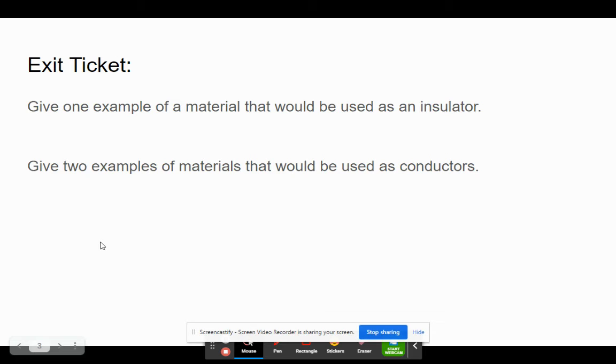All right, kiddos. So I want you to head to your Google Classroom. For your exit ticket today, you're going to give one example of a material that would be used as an insulator. And you're going to give two examples of materials that would be used as conductors. So put your thinking cap on. You should have seen some within this video. But if you'd like to do your own research, just as he mentioned, all the more power to you. I would love for you to find as many insulators and conductors as possible. Happy hunting!